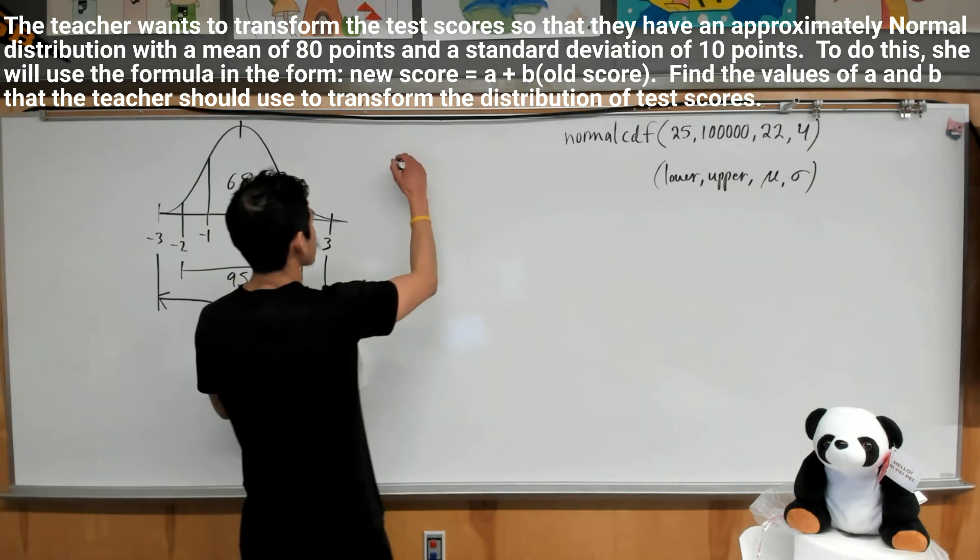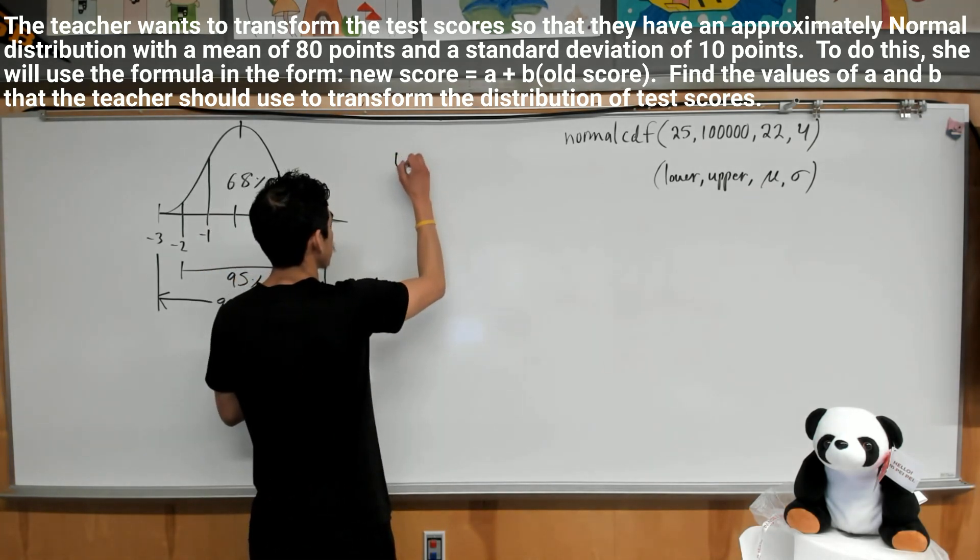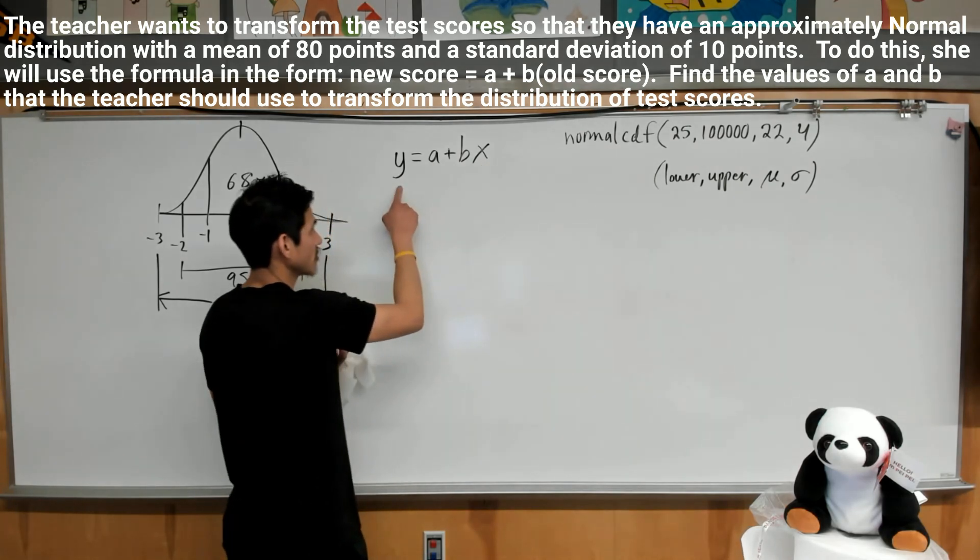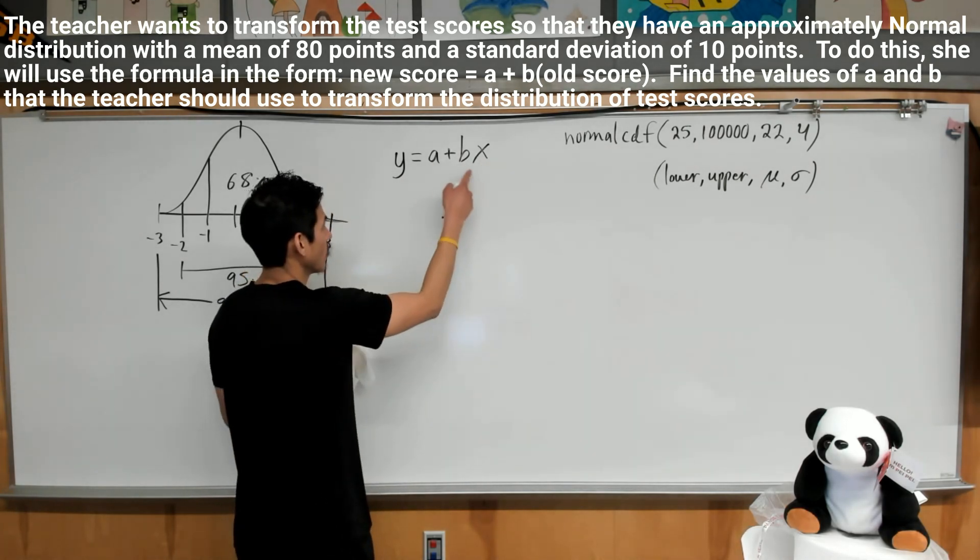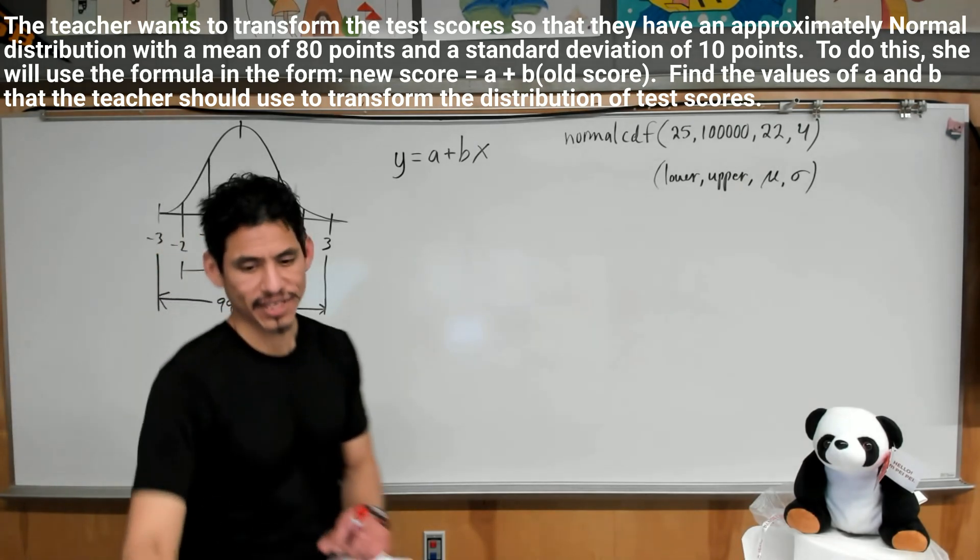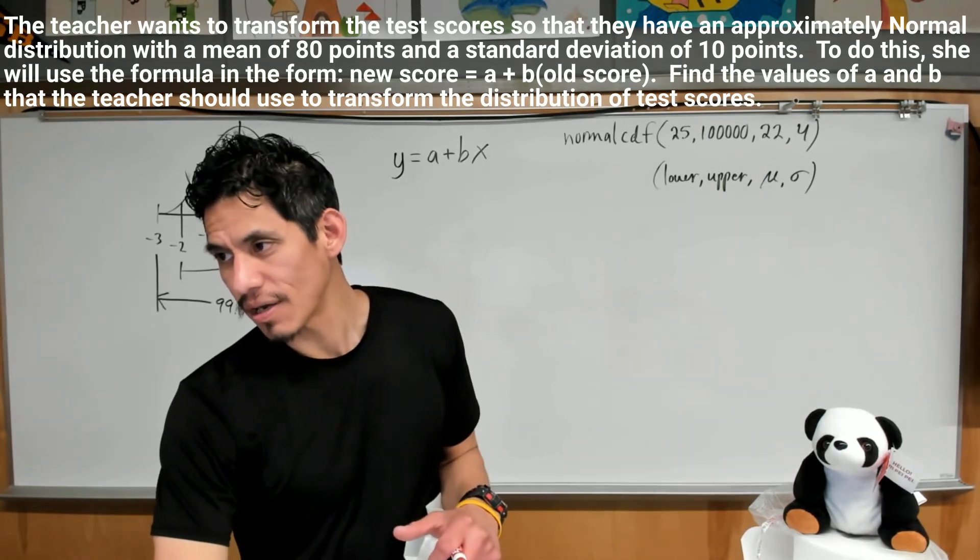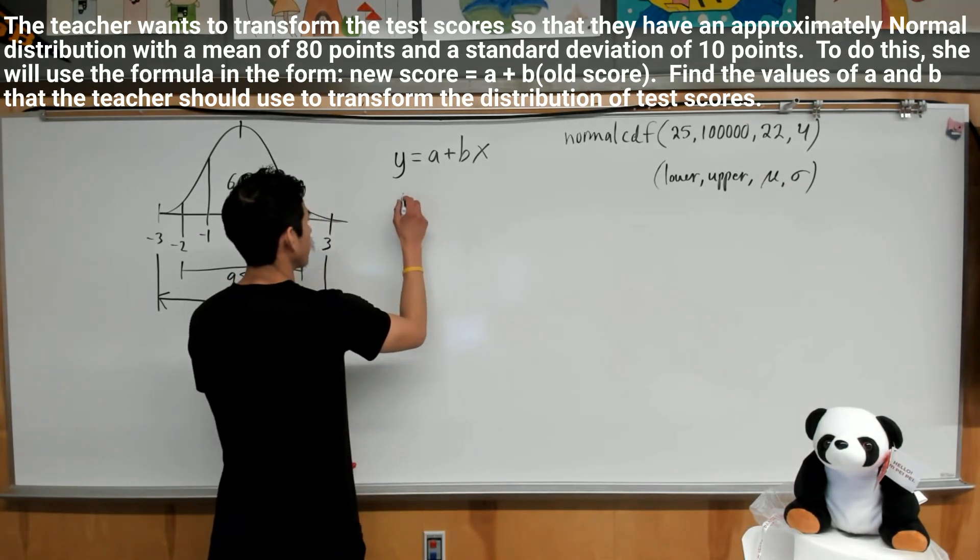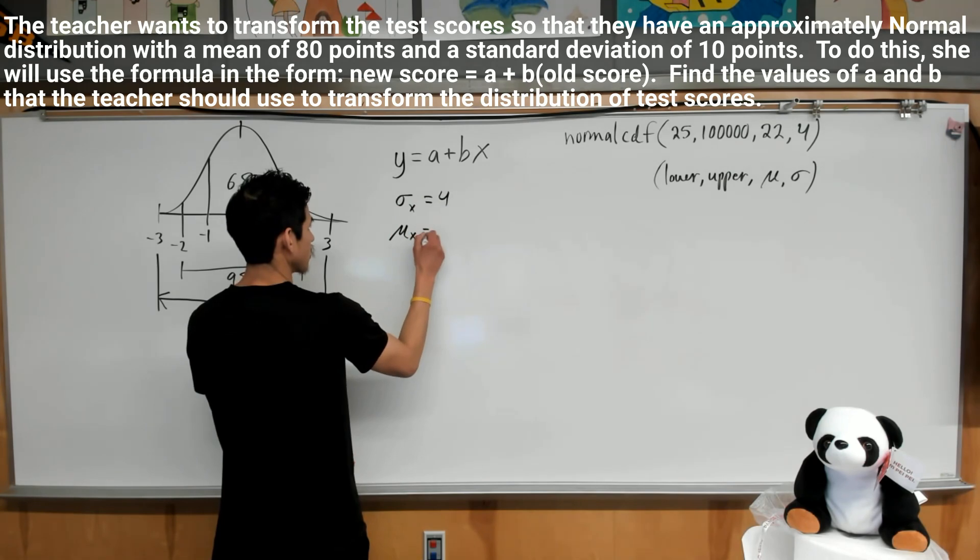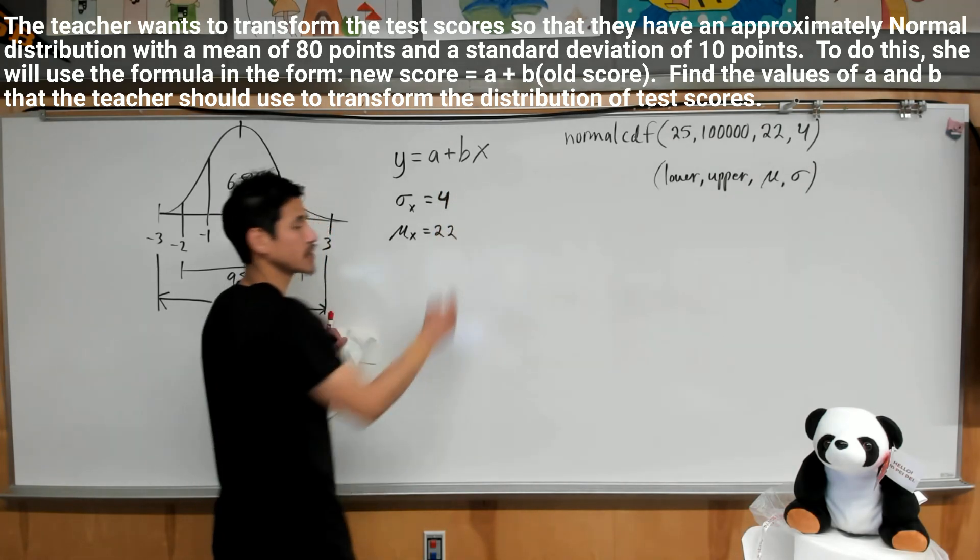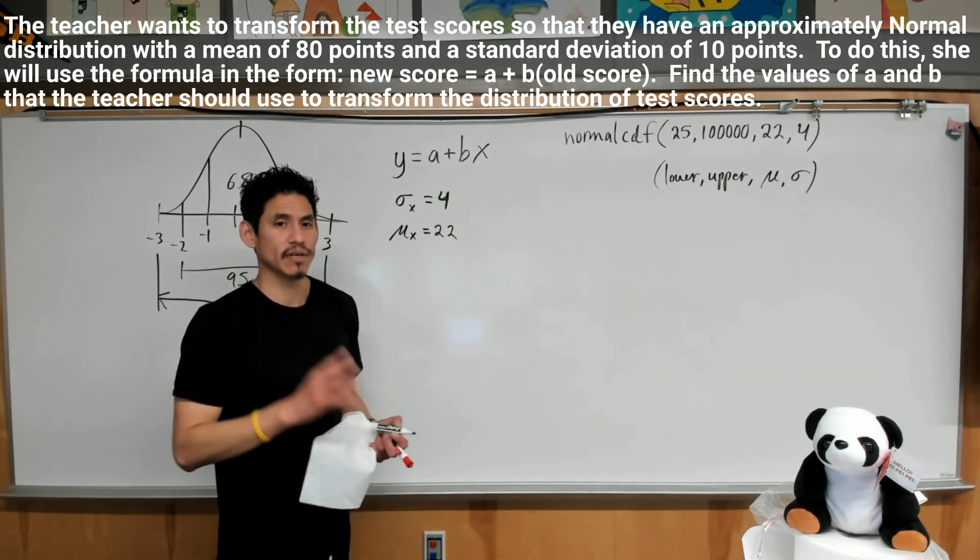Okay, so we got a new score, let's write that as Y equals A plus B times the old score, which is just X. So X is the old score, Y is the new score. Now with the original values, the mean and standard deviation are 22 and 4. So let's write the original σ of X was 4, μ of X was 22.